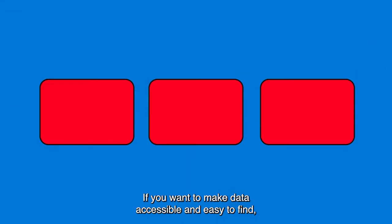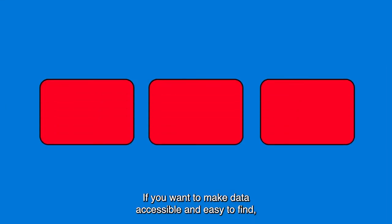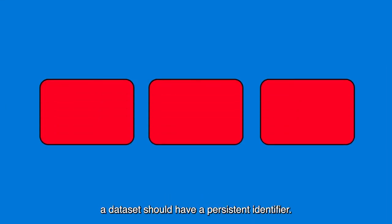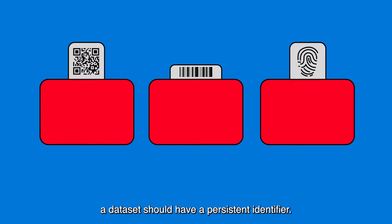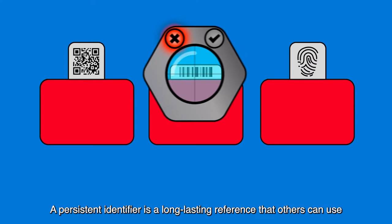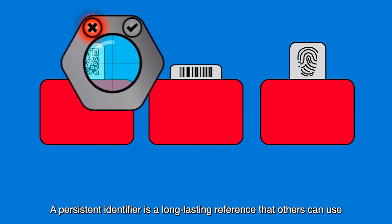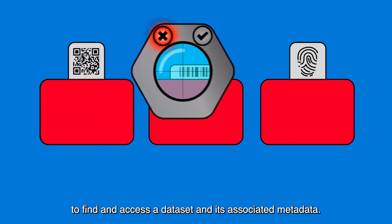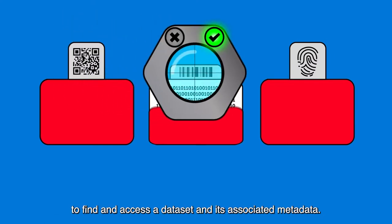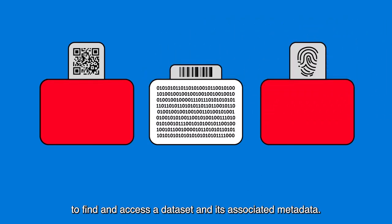If you want to make data accessible and easy to find, a data set should have a persistent identifier. A persistent identifier is a long-lasting reference that others can use to find and access a data set and its associated metadata.